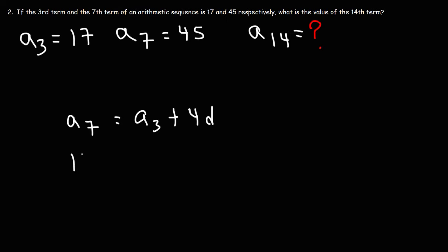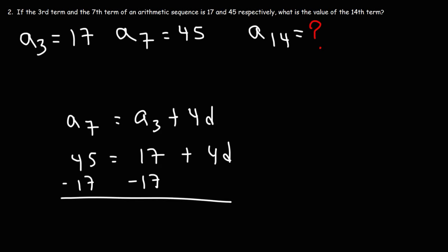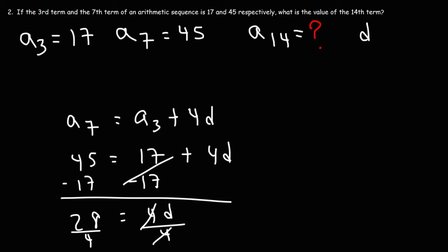We can say that the 7th term is equal to the 3rd term plus 4 common differences. The 7th term is 45 and the 3rd term is 17. So now we can solve for d. Subtracting both sides by 17: 45 minus 17 is 28, and that's going to equal 4d. So if we divide both sides by 4, we can see that the common difference is 7 in this example.